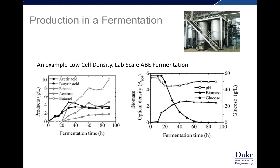Production in a fermentation has a time course. This would be an example time course of product formation in the ABE fermentation — acetone, butanol, ethanol fermentation — which is a clostridial-based process. This process was used back in World War II in the UK to generate jet fuel when they were cut off from the continent. The cells grow and make a mixture of products including acetone, butanol, and butyric acid, which can be measured as a function of time, along with biomass, optical density, sugar concentration, and fermentation parameters such as oxygen, concentration, and pH.